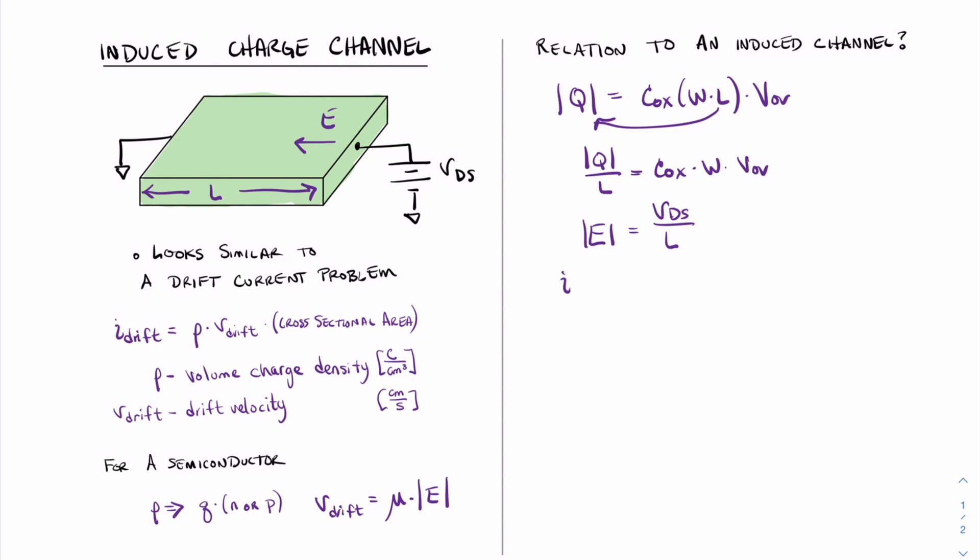In this case, we can say that the current from drain to source is Cox times the width times the over voltage times the mobility of the carriers. In this case, let's consider this to be a p-type substrate with an n-type induced channel. So the mobility of carriers is the n carriers times the electric field, which is given as VDS divided by L.